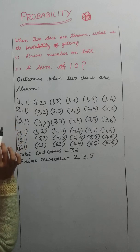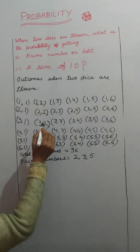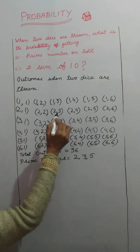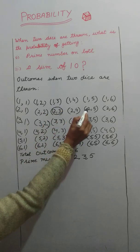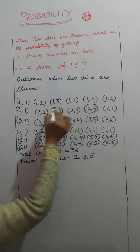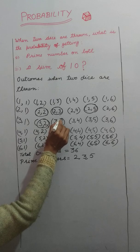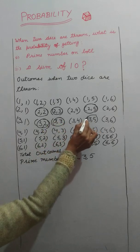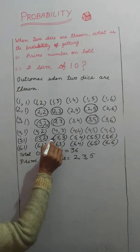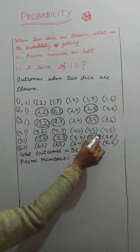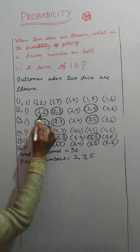Now we need to find all cases where there are prime numbers on both dice. These are: (2,2), (2,3), (2,5), (3,2), (3,3), (3,5), (5,2), (5,3), and (5,5). So these are the favorable outcomes for prime numbers on both dice.